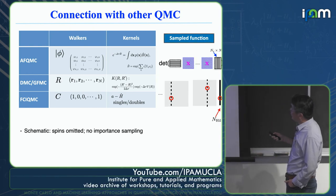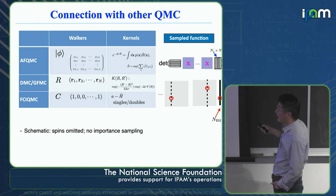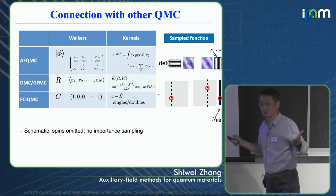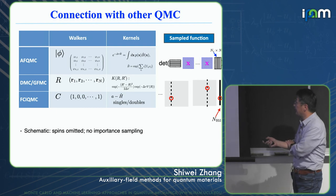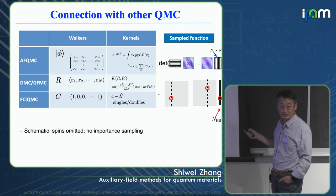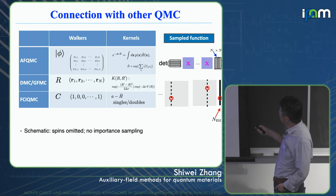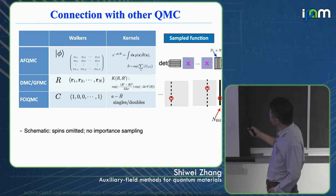The function sampled in AFQMC: one walker is a matrix of basis size by number of electrons. You multiply a sequence of B matrices and eventually meet a trial wave function — a single determinant for simplicity, though more elaborate wave functions such as a sum of determinants are possible. The determinant is a number — that's the function f(x) being sampled, summed over all possible auxiliary field configurations x. Different x's trace different paths in field space, and you sum over them.